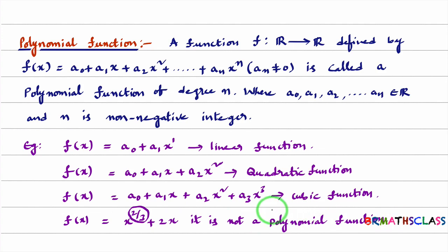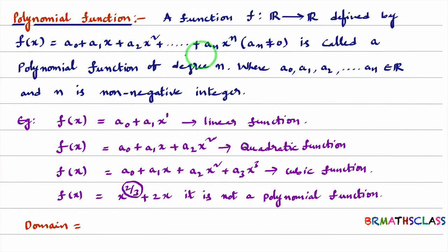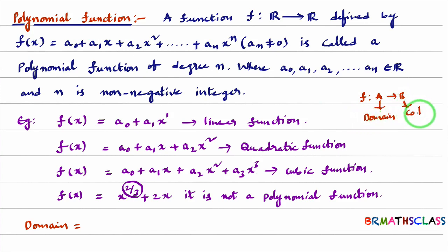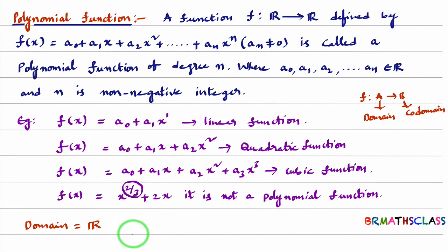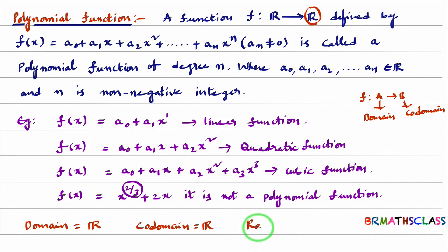Now for domain, codomain, and range of a polynomial function: we know that if f is a function from A to B, then set A is called the domain and set B is called the codomain. So for a polynomial function, the domain is the set of all real numbers and the codomain is the set of all real numbers. For different real values of x, f(x) will give different real numbers, so the range of a polynomial function is also the set of all real numbers.